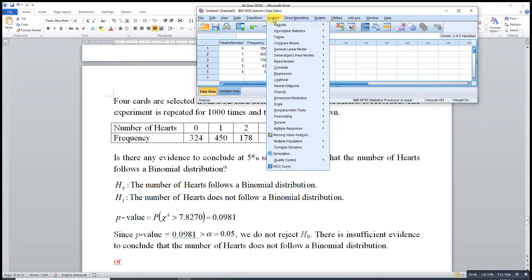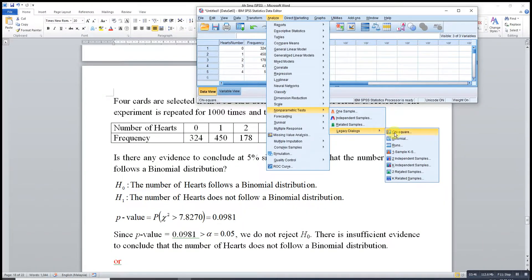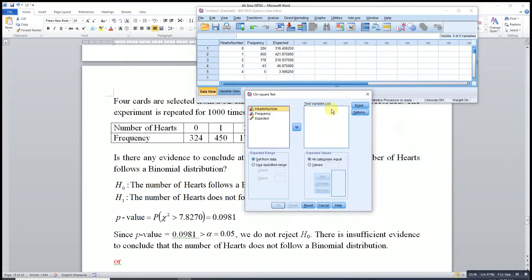Then we go to Analyze. Look for Non-parametric Tests, Legacy Dialogs, Chi-square. Bear in mind that what we are going to test is the number following a binomial distribution, not the frequency.